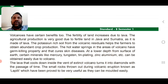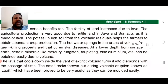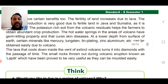Potassium from volcanic residuals helps farmers obtain abundant crop production, so they don't need additional fertilizers. Hot water springs in volcanic areas have germ-killing properties and can cure skin diseases. From geysers and at lower depths, certain minerals like mercury, tungsten, tin, zinc, and aluminium are more easily available due to volcanic activity.